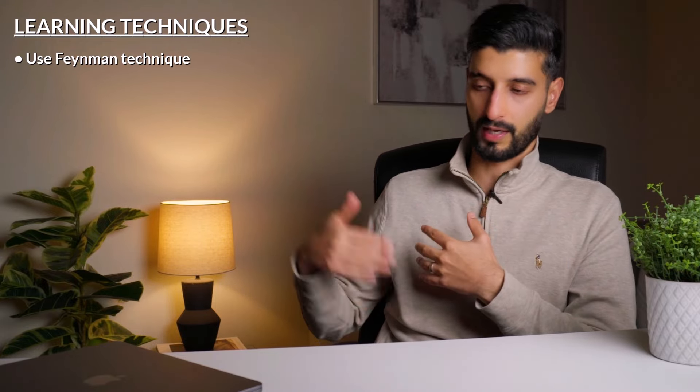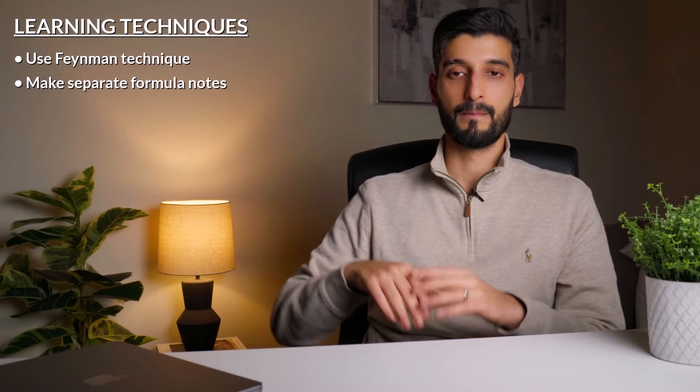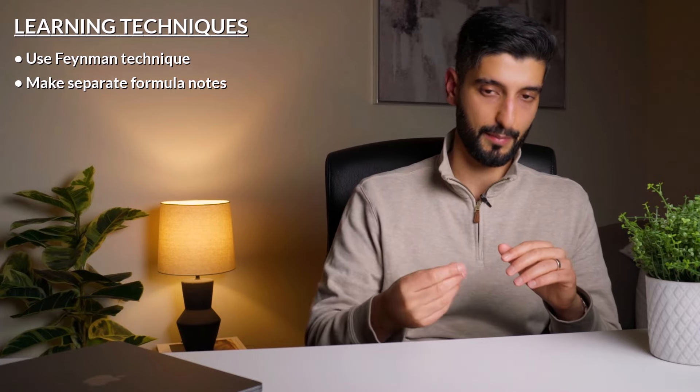A couple of points I mentioned in my Level 2 video still apply here. Use the Feynman technique, which is essentially where you articulate your learning—either explain it to someone, say it out loud, or put it on paper. That helps you identify the gaps in your knowledge. For the formulas, keep a separate set of notes isolated from all the detail where you work through them and try to derive them. Use the derivation approach wherever possible.